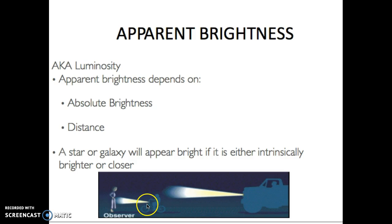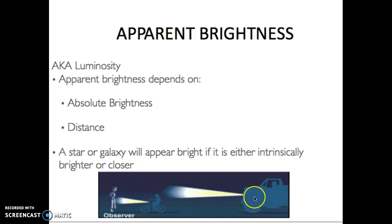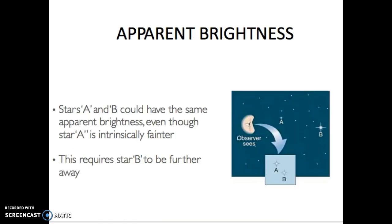Consider this observer: they see a small, measly light from a bicycle that looks very bright because it's so close. But they don't realize that a truck far away has a huge, bright light. Since the truck is so far away, it doesn't appear very bright to the observer — it has very low apparent brightness, even though intrinsically the truck's light is much brighter.